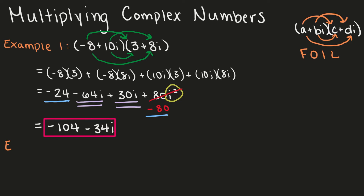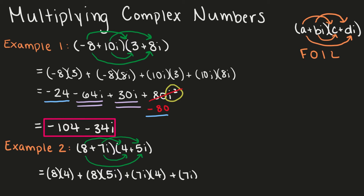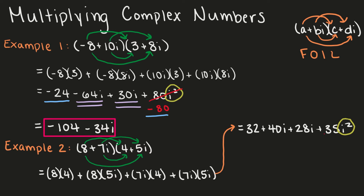Let's take another example. We have 8 plus 7i times 4 plus 5i. Let's FOIL, so we multiply the first, outside, inside, and last. We get 8 times 4 plus 8 times 5i plus 7i times 4 plus 7i times 5i. This gives us 32 plus 40i plus 28i plus 35i squared. Our i squared is negative 1, so that becomes negative 35. Identifying and combining our like terms, we get negative 3 plus 68i.